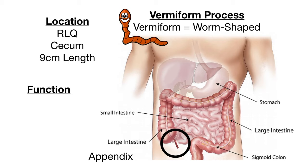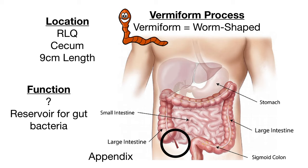The function of the appendix is overall unknown, but there are a couple of different ideas. The first one is that it's a reservoir for gut bacteria. So when we're experiencing a GI illness and suffering from diarrhea, some of that good bacteria in the intestine goes into the appendix and helps to maintain that good gut flora. The second idea is that the appendix is involved in the lymphatic and immune system.